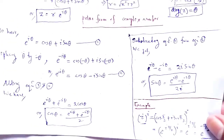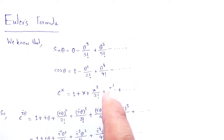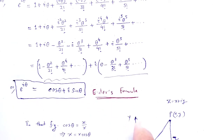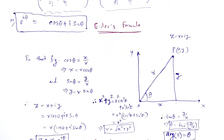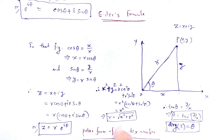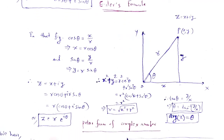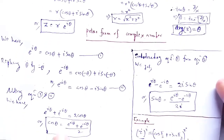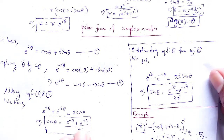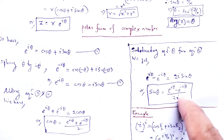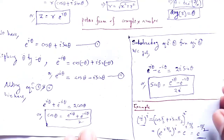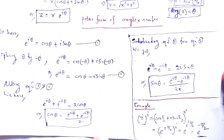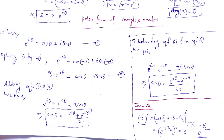So with the help of this video lecture, we understand the concept of Euler's formula. To summarize: e to the power i theta equals cos theta plus i sin theta. The polar form of complex number is z equals r e to the power i theta, where r equals the square root of x squared plus y squared and theta equals tan inverse of y by x, known as the argument of the complex number. Also, cos theta equals (e to the power i theta plus e to the power minus i theta) divided by 2, and sin theta equals (e to the power i theta minus e to the power minus i theta) divided by 2i. Thank you.